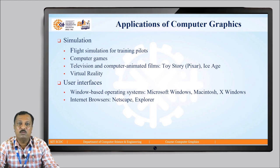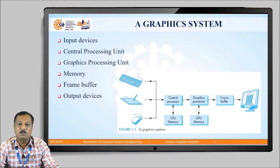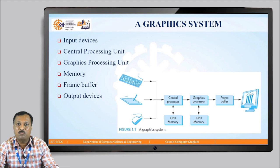We also use computer graphics for creating various internet browsers like Explorer, NetScape, etc. A typical graphic system comprises various elements like input devices, central processing unit, graphical processing unit, memory, frame buffers, and output devices. Input devices are used to take input from the user to define the coordinates of the object to display. Based on the input, the CPU and GPU apply algorithms for displaying the corresponding object, which is then supplied to the frame buffer to store the processed information. The processed information is then displayed on the output device.